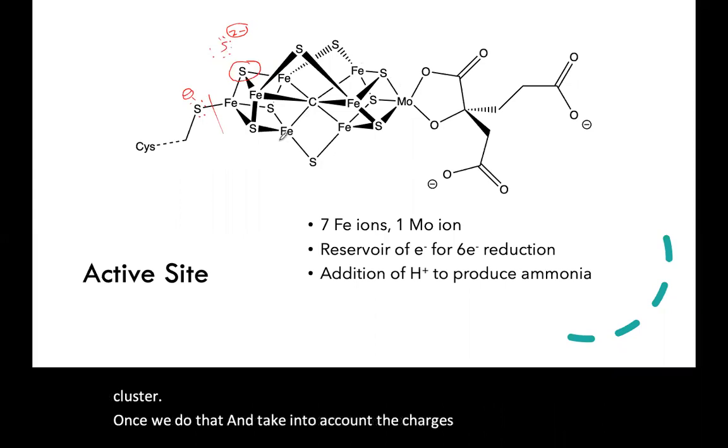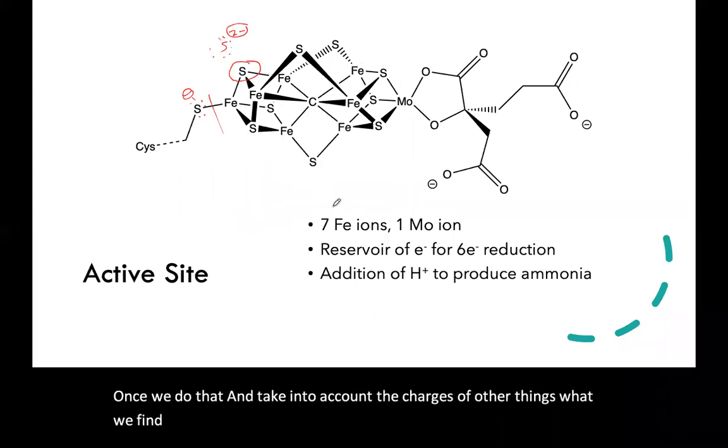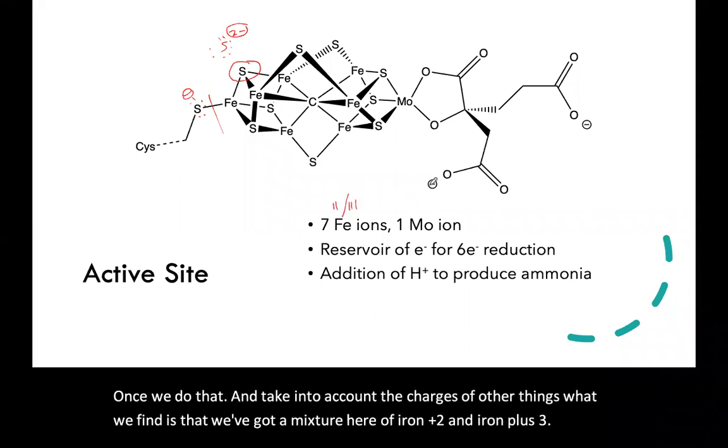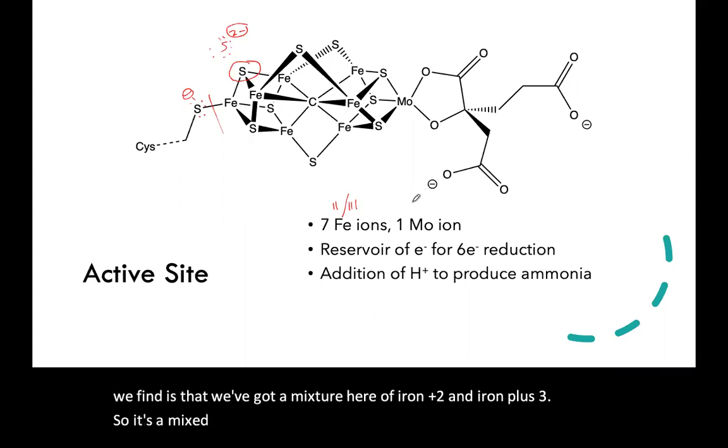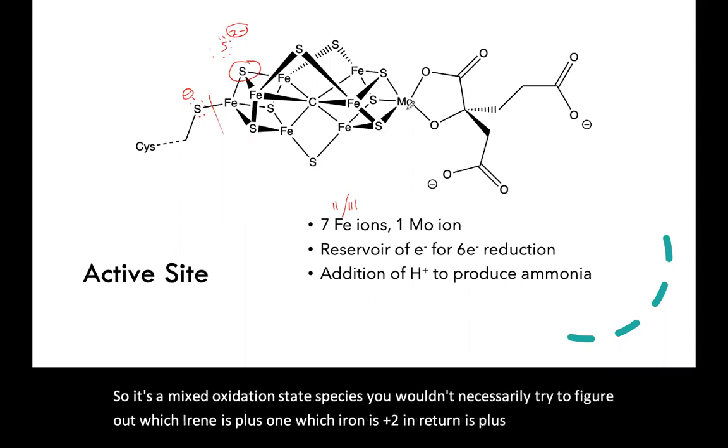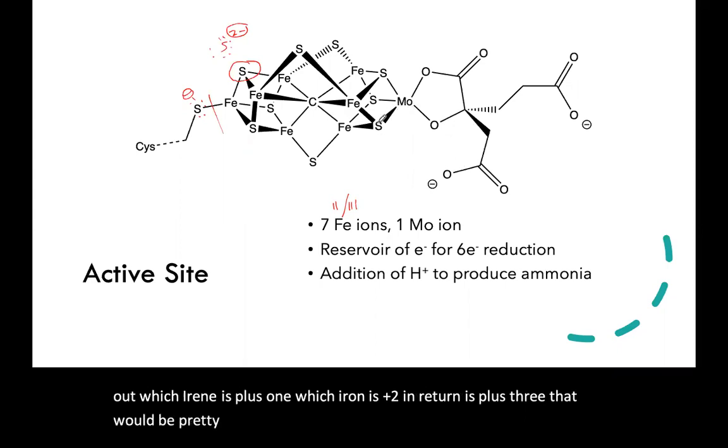Once we do that and take into account the charges of other things, what we find is that we've got a mixture here of iron +2 and iron +3. So it's a mixed oxidation state species. You wouldn't necessarily try to figure out which iron is +1, which iron is +2, and which iron is +3—that would be pretty laborious—but it's a mixture of different oxidation states.